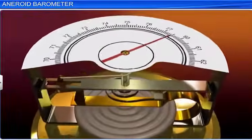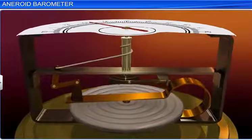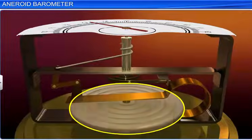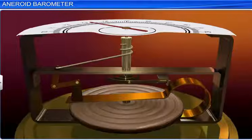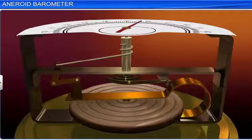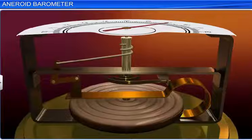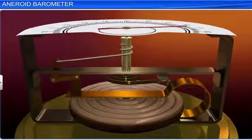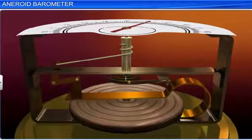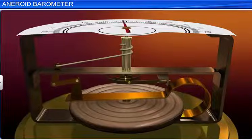Let us now study the working of the aneroid barometer. Small changes in external air pressure cause the cell to expand or contract. This expansion and contraction drives the levers such that the tiny movements of the diaphragm are amplified and displayed on the face of the aneroid barometer.